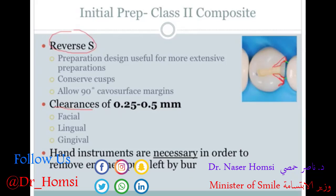Hand instruments like the enamel hatchet or gingival margin trimmer are almost always necessary to remove all the little enamel spicules and spurs left by the burr.